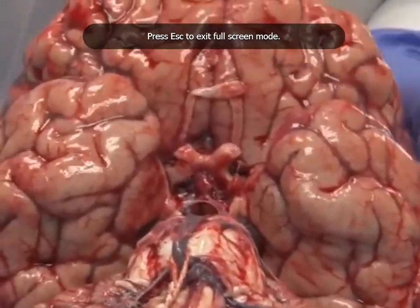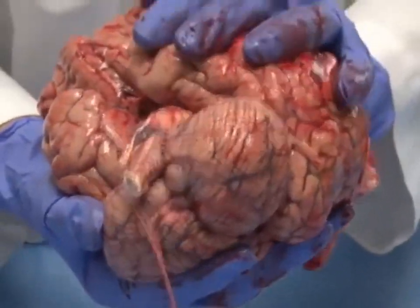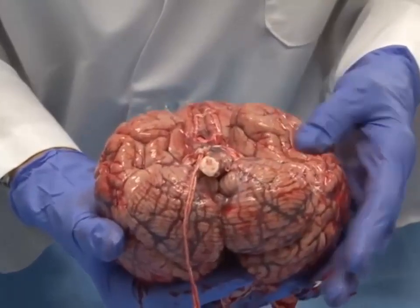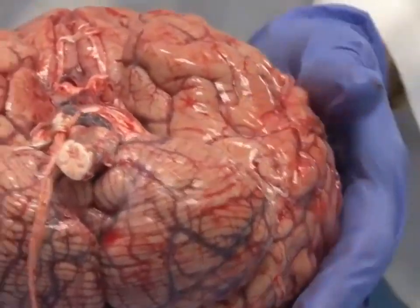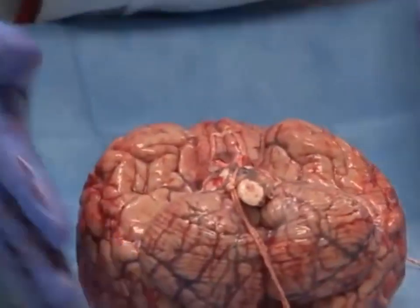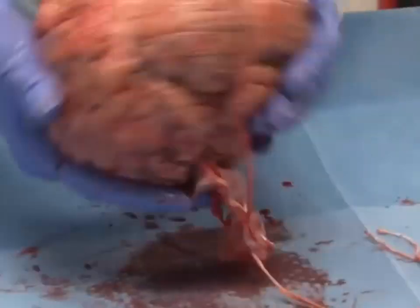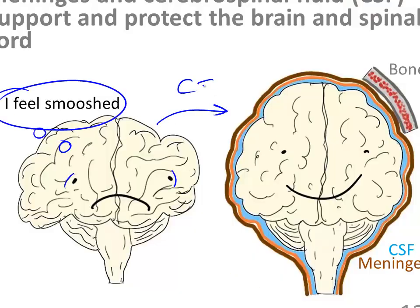A fresh, unfixed human brain is very soft. The brain actually needs CSF to float it within the skull so it doesn't squish under its own weight. The cerebrospinal fluid effectively cushions the brain and decreases its effective weight.